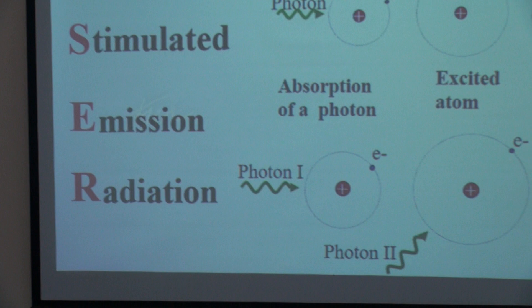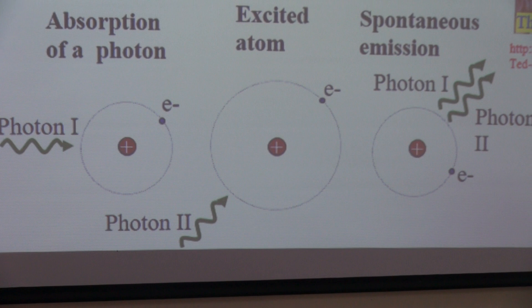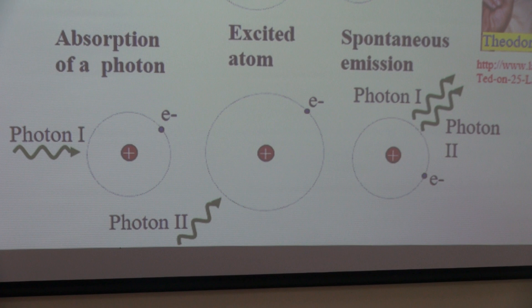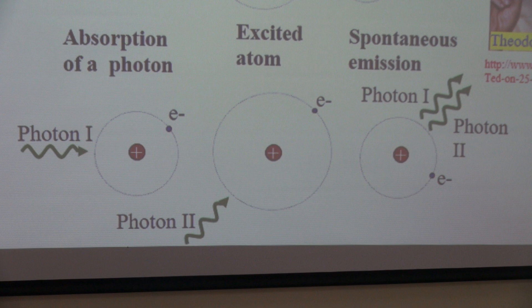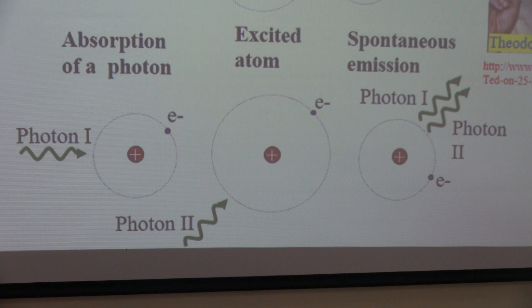When you have a photon coming in and it interacts with an electron, taking the atom to an excited state, and then another photon comes in interacting with that excited atom, that gives rise to two photons coming out. Crucially, the two photons will be going in the same direction and they will be in phase with the same frequency.